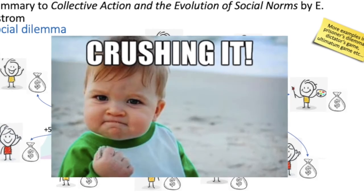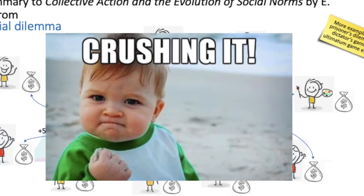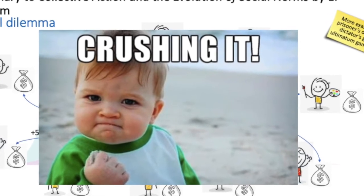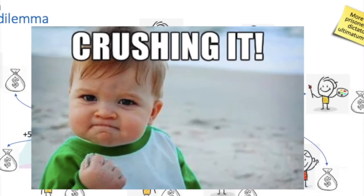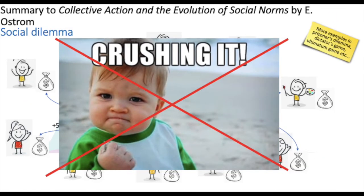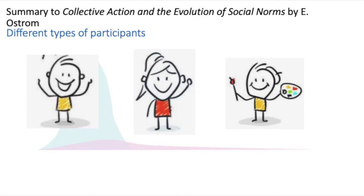If you think in reality the individuals always play this way, you're wrong. Unfortunately the solution is not so easy — otherwise it wouldn't be a social dilemma. Elinor Ostrom defines three different types of individuals in the social dilemma.